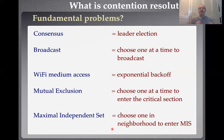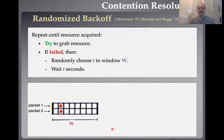So on one hand, I'm going to be giving a fairly theoretical talk about a fairly abstract problem — contention resolution — but this is a problem that shows up almost everywhere. The history of this problem probably goes back to papers by Abramson and Metcalfe and Boggs back in the seventies, where they introduced this idea of using randomized back-off to solve contention resolution. It's a very simple idea: you have a bunch of packets that want to access this shared channel. They try to grab the resource. If they succeed, wonderful — they access the channel.